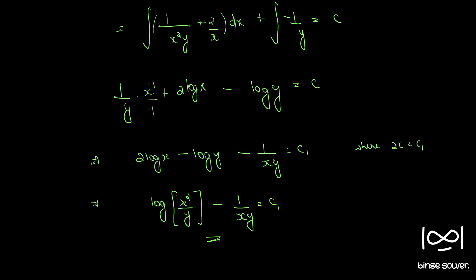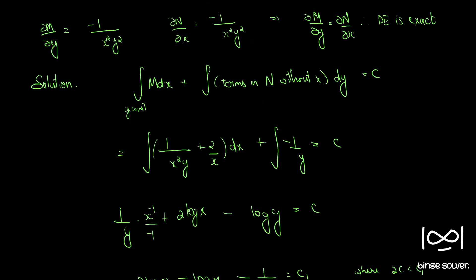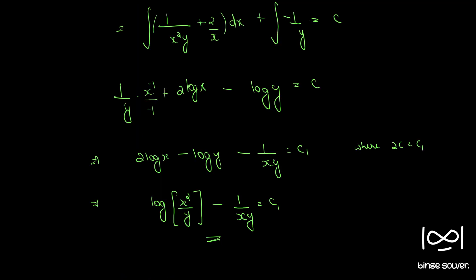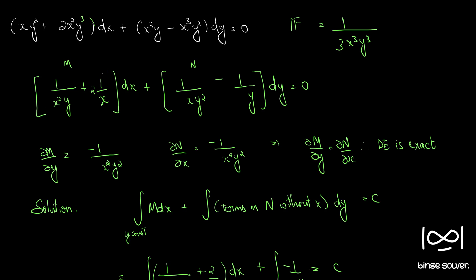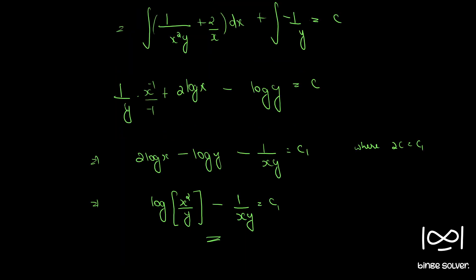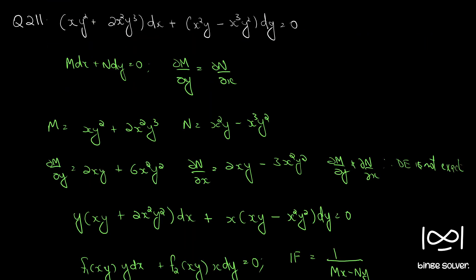So this is 2 log x − log y − 1/(xy) = c. Applying logarithm properties, log(x²/y) − 1/(xy) = c₁, where 2c = c₁. This is the correct final answer for question number 211. I apologize for the earlier mistake with the integrating factor.